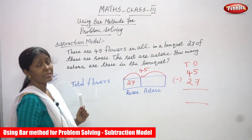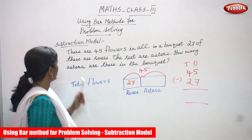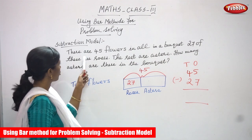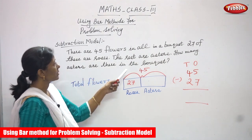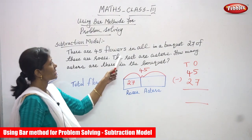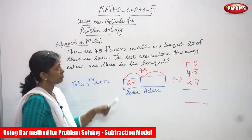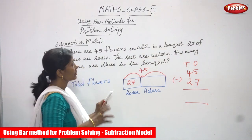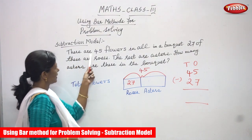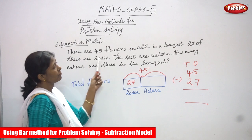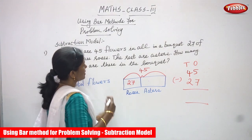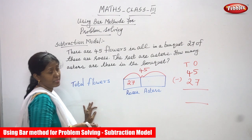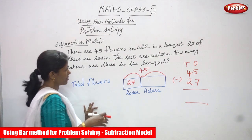Now we are going to see the subtraction model. This is a word problem. There are 45 flowers in all in a bouquet. So in that bouquet there are 45 flowers altogether.